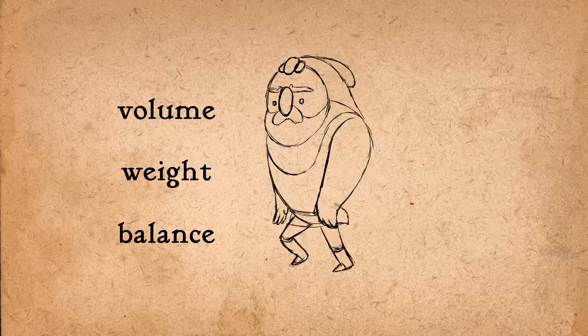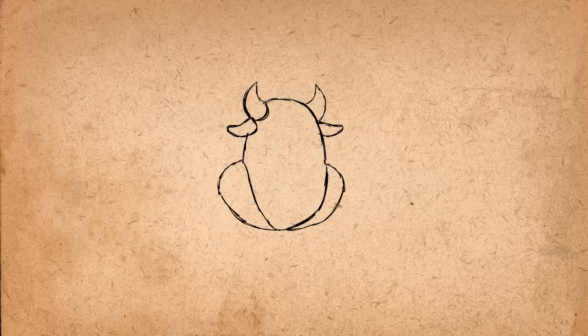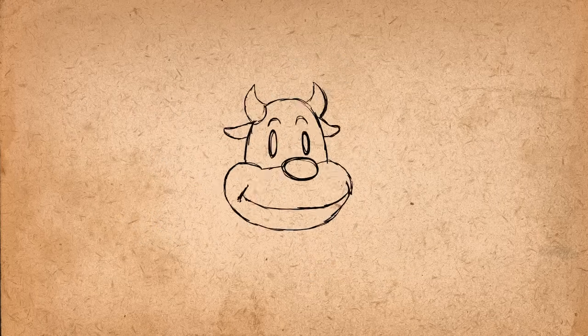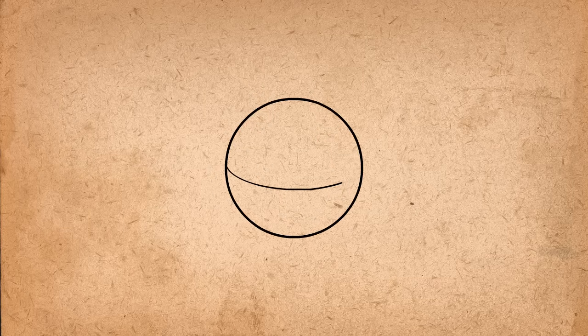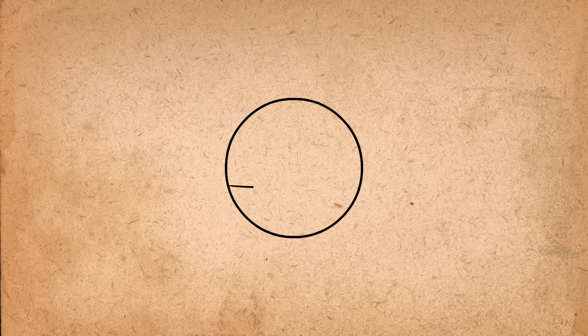One thing that makes animating easier is being able to draw a figure from all angles. This requires knowledge of three-dimensional drawing. For example, when drawing a line on a sphere, it must follow the contour of the sphere's surface. A straight line instantly makes the circle look flat.